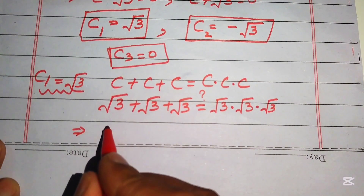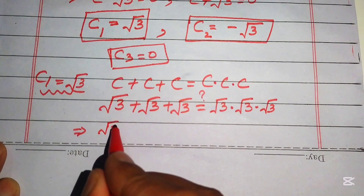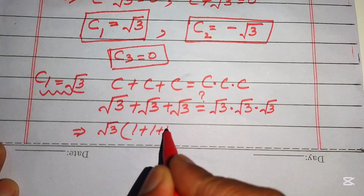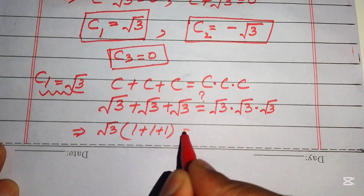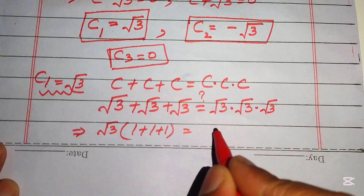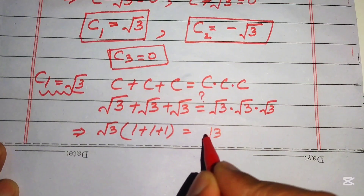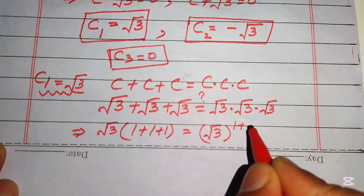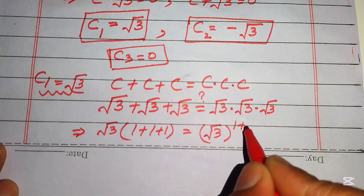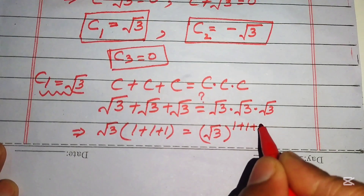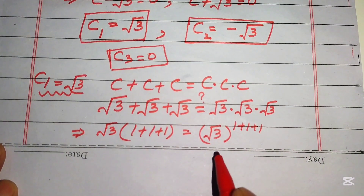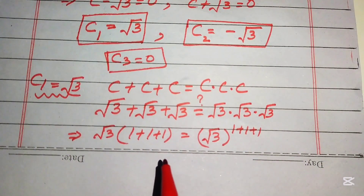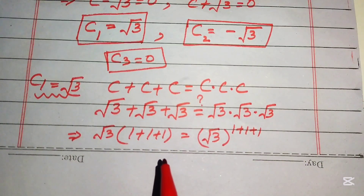On the left we factor out square root of three and get one plus one plus one remaining. On the right we apply the exponential law, writing it as square root of three to the power of one plus one plus one.